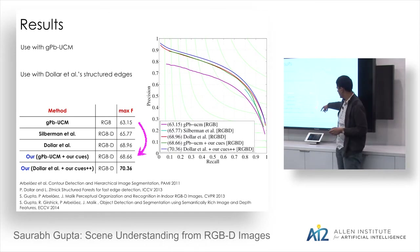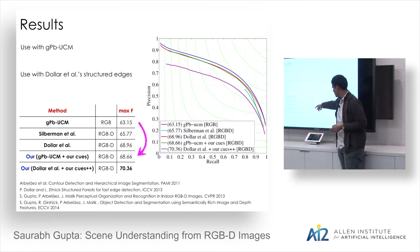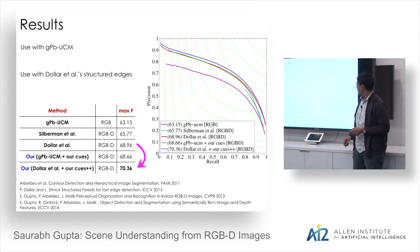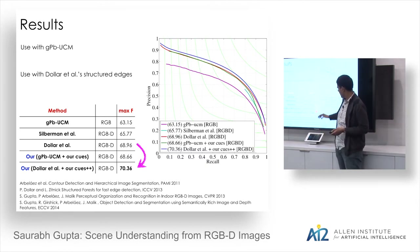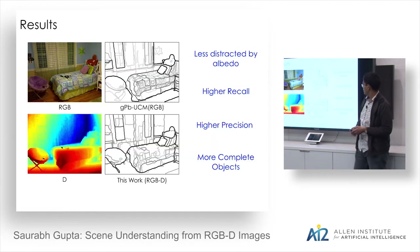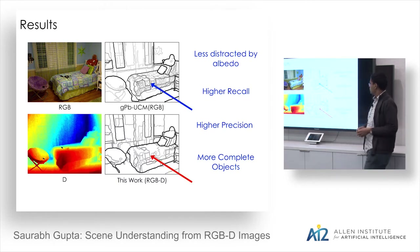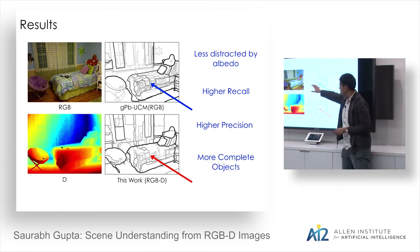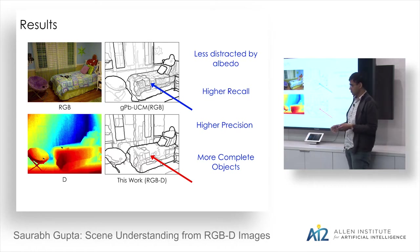Higher is better on this contour detection metric. Using our depth cues, performance goes from 63 to 68.6. With Dollar's structured edges as an RGBD baseline, adding our cues gives a further boost. Qualitatively, you get less distraction from albedo — internal contours on the bed are suppressed — and you fire only on geometric contours, which are more critical.